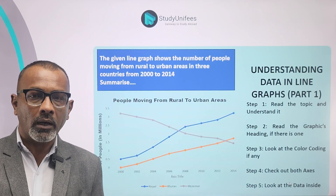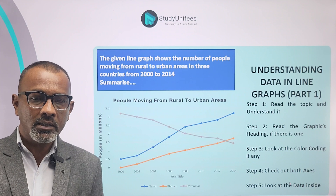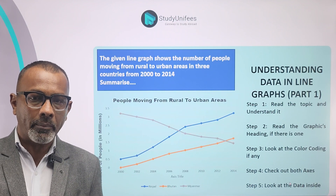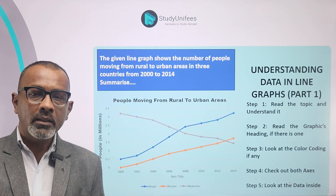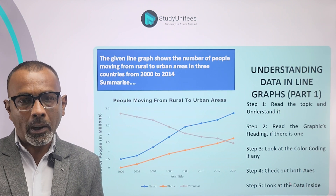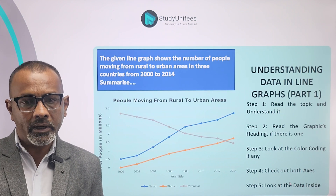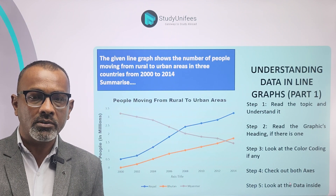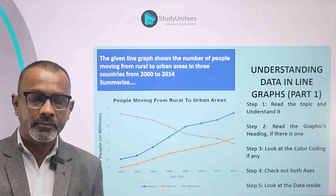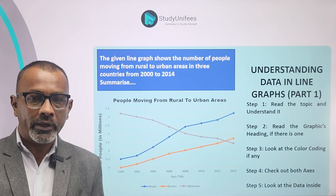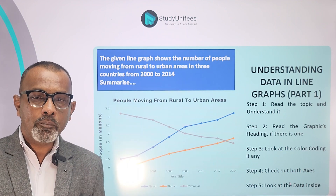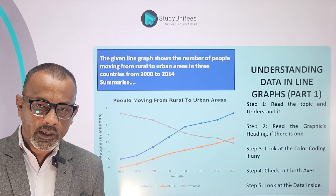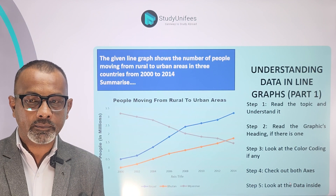Now let's look at part 1 of the analysis with a line graph. Again, step number 1 is to read the topic. The given line graph shows the number of people moving from rural to urban areas in three countries from 2000 to 2014. Step 2: read the graphic's heading — 'People moving from rural to urban areas.' The heading, as usual, matches with the topic.